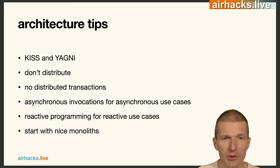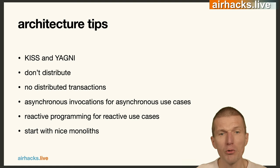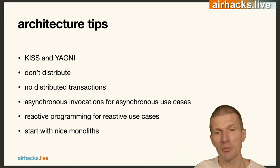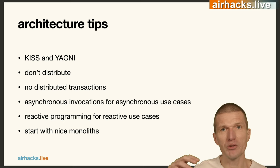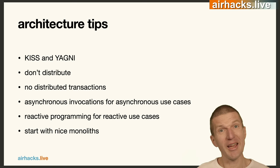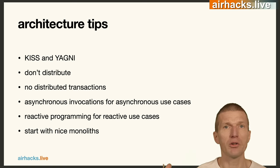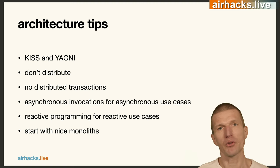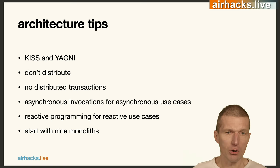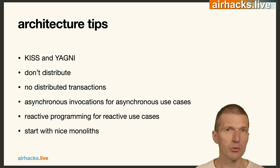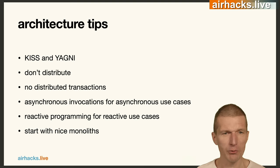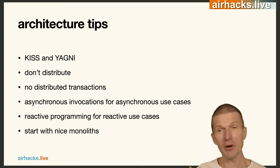Architecture tips: keep it simple and stupid, don't distribute, no distributed transactions, try to avoid the saga pattern if not necessary. Asynchronous invocation only for asynchronous use cases. For instance, if you write something to DynamoDB or an S3 bucket, you can create an asynchronous lambda to consume it. Or if you have a Kafka or Kinesis stream, it's natural to have an asynchronous consumer. But it's not natural to have an asynchronous lambda reacting to HTTP, because HTTP is not asynchronous.